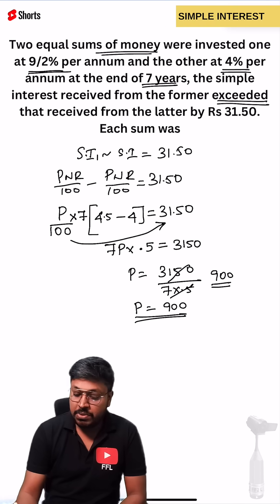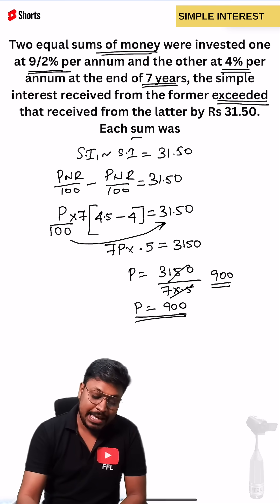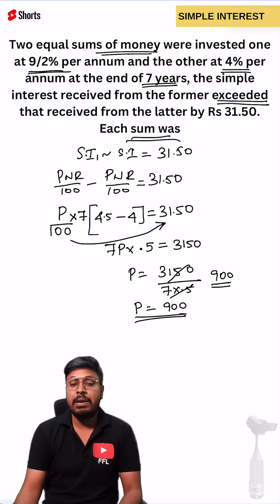We can say that the answer for this question - our target is to find each sum, that means the principal amount. The principal amount here is 900.